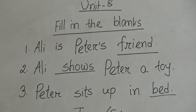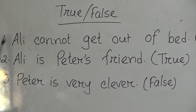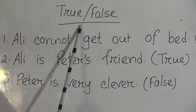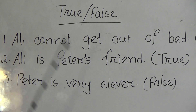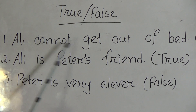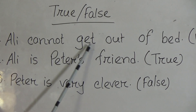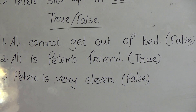Now, true-false. If the sentence is true, then we have to write true at the end of the sentence. And if the sentence is false, then we have to write false. So, the first one: Ali cannot get out of bed. According to the story, this sentence is false.